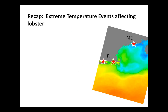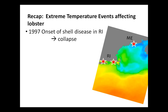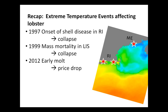So in three different places we've seen extreme temperature events affecting lobsters and lobstermen: the 1997 onset of shell disease that still persists, resulting in a collapse in southern New England; the 1999 mass mortality in Long Island Sound, another collapse; and the 2012 early molt from the ocean heat wave, which didn't result in a population collapse but caused a price collapse, while abundance remains high.